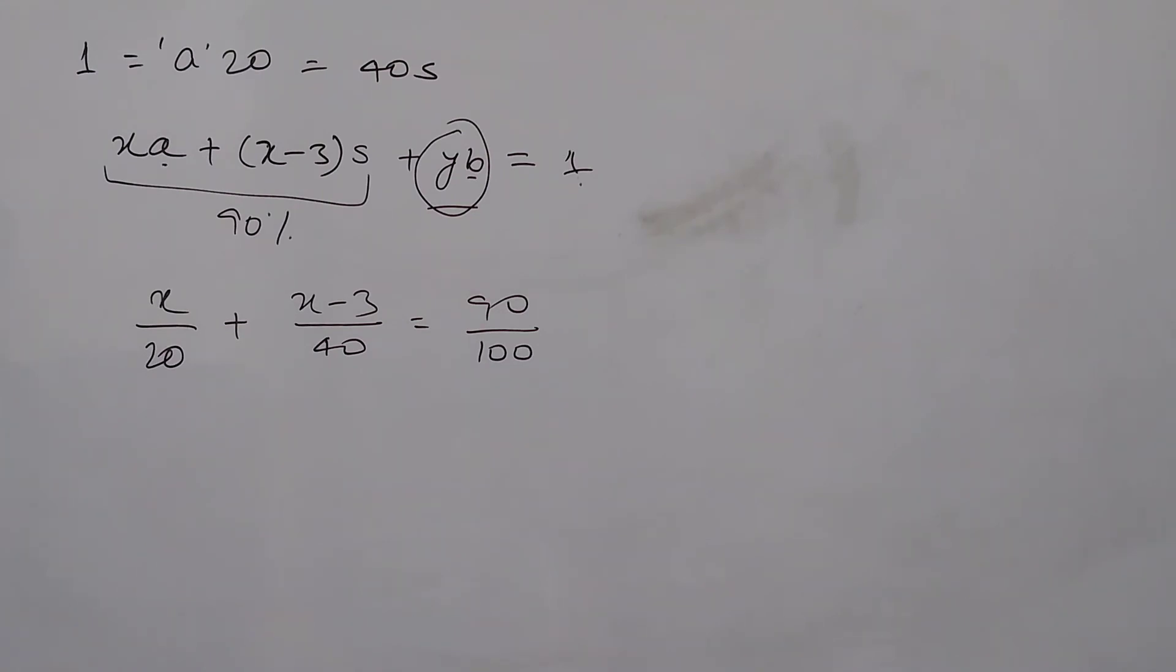Now from here it's very easy to get the value of x which is the answer of this question. This will get cancelled, so we have 2x plus x, so 3x minus 3 equals to 36, therefore 3x equals 39, so x is 13.